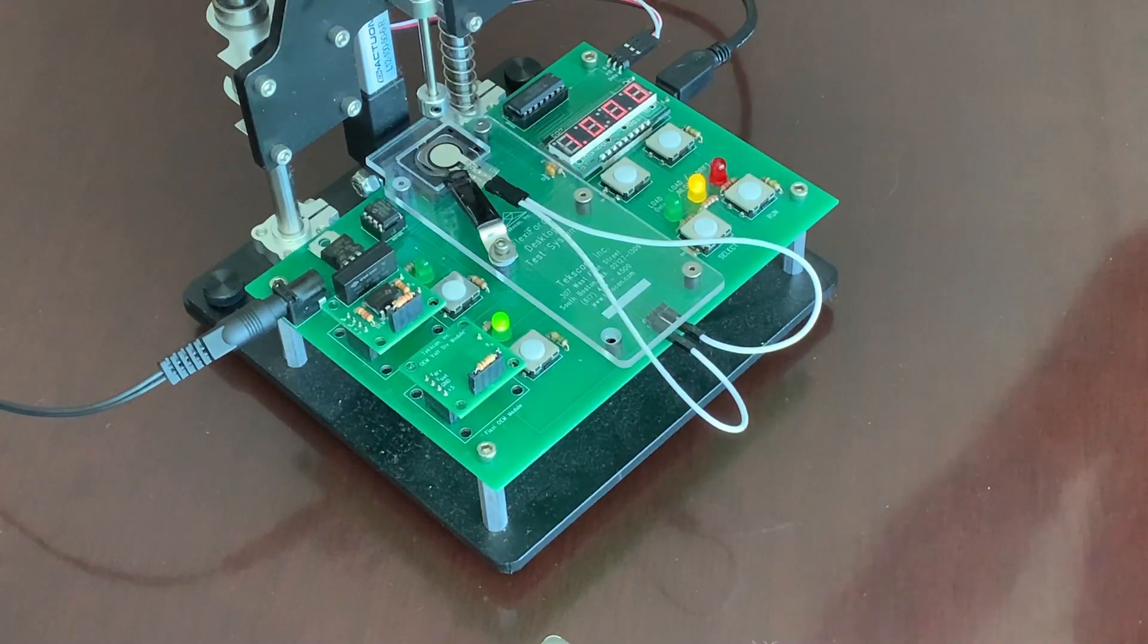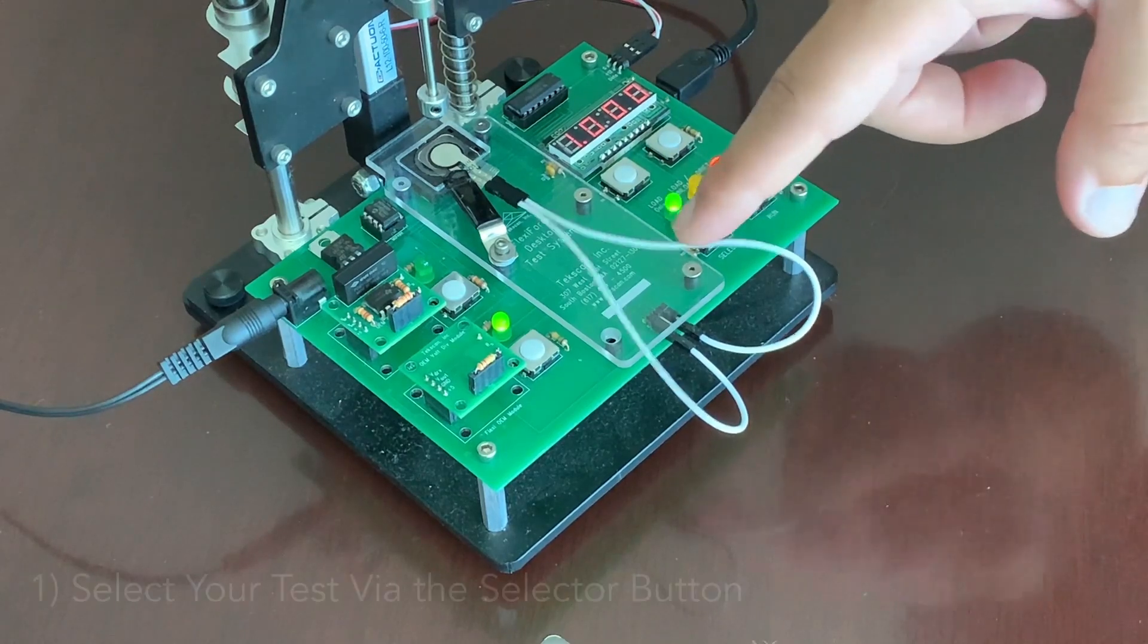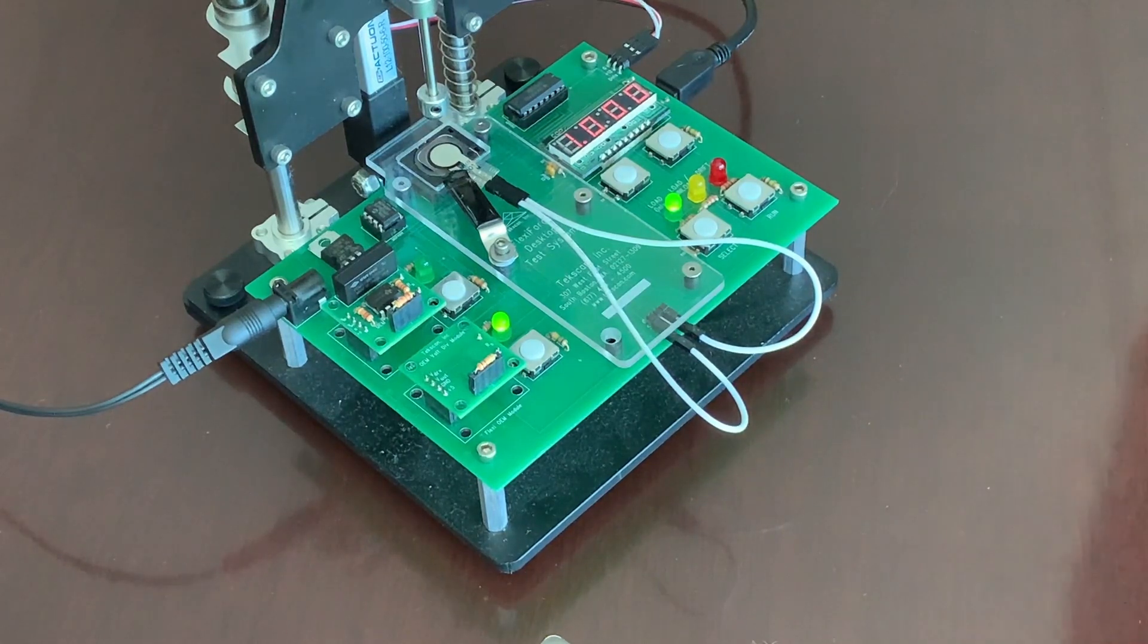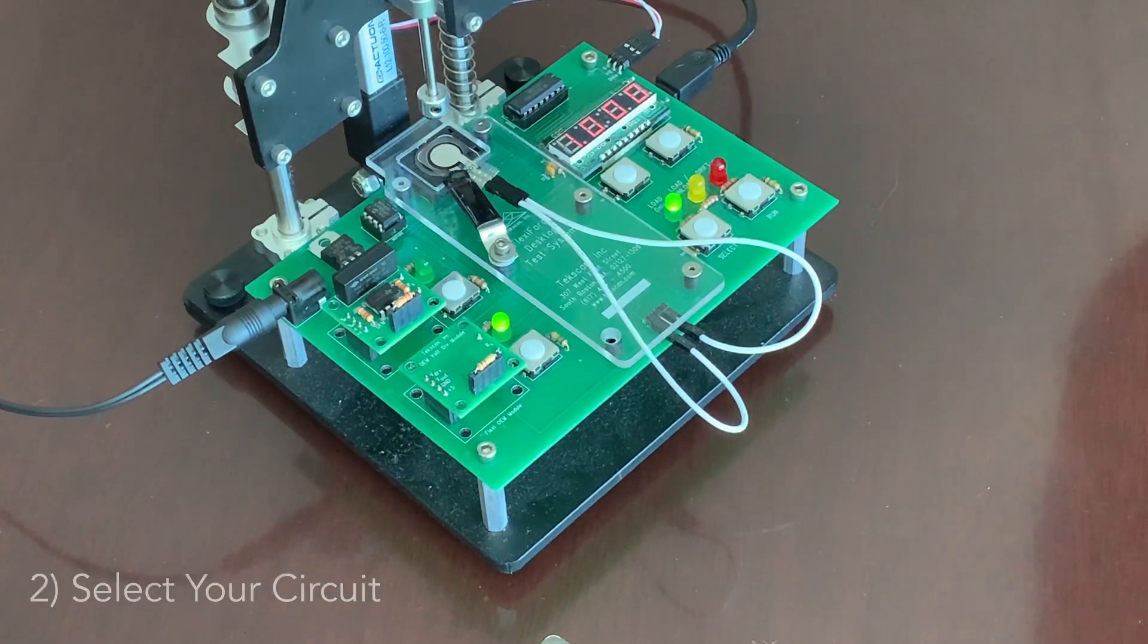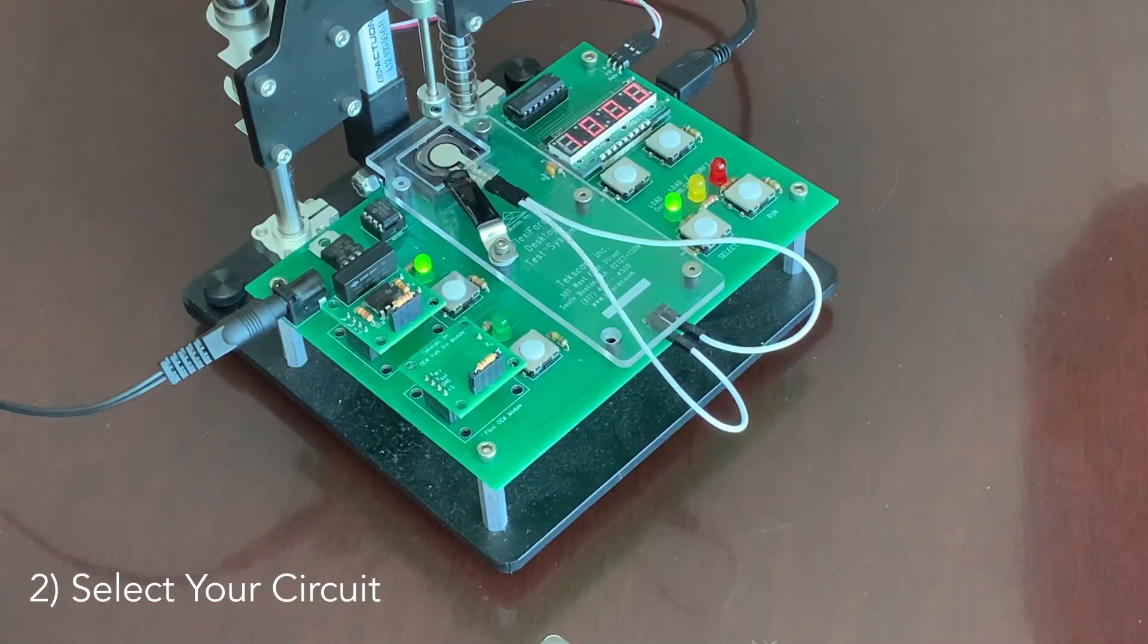So we're going to start with a linearity test. What we do is use the selector knob to select the green LED under the load only section of the board, which corresponds with the linearity test. Next, we're going to choose the circuit that we're going to read the data off of for this test. We're going to go with the inverting op amp circuit. We're just going to press and select that circuit.